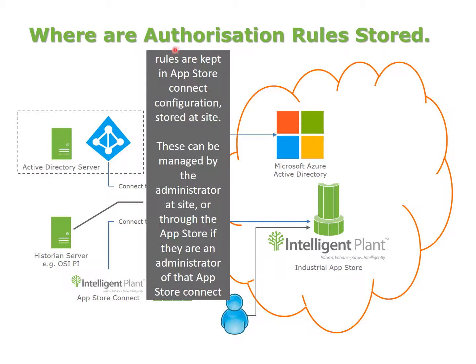So where are authorization rules stored? This is rather special — rules are actually kept in App Store Connect itself, meaning the configuration is stored at site, not in the cloud. These can be managed by the administrator through the App Store itself, or they can be managed on App Store Connect directly. The UI in the App Store is much nicer, but if you want to keep it totally local, you can look at the local files and set it up there.